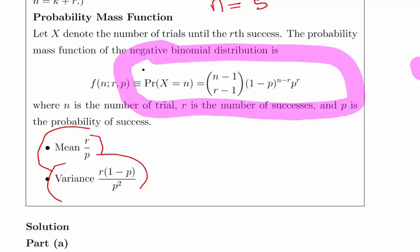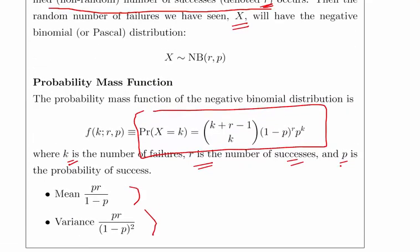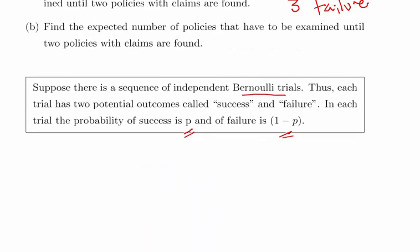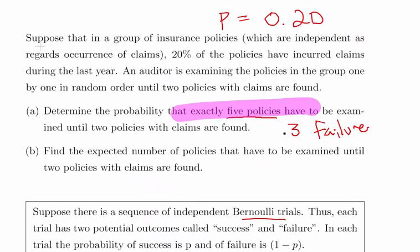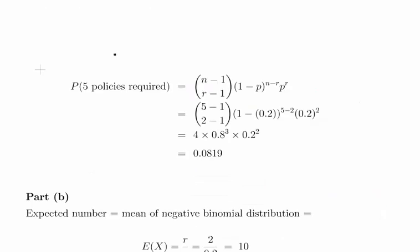For this case we're going to go with Type 2. We're going to say N equals 5, P equals 0.2, R equals 2. And that's pretty much everything we need.